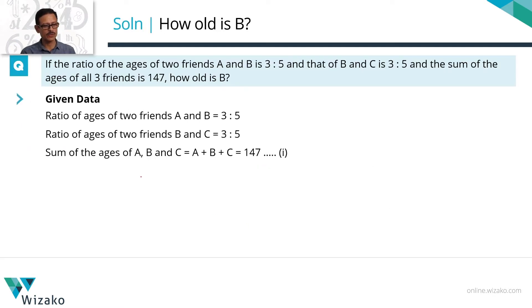Quickly jot down key data given to us. Ratio of the ages of A and B is 3 is to 5, B and C is 3 is to 5. Sum of the ages A plus B plus C equals 147. Obviously, the variables A, B and C represent the ages of A, B and C.